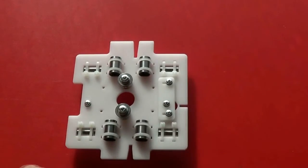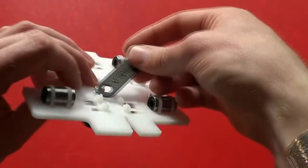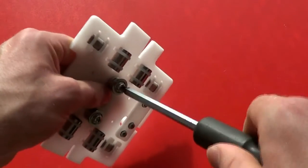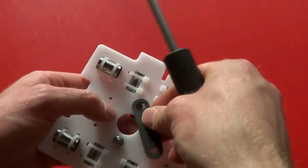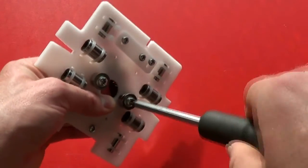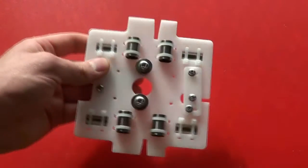And again, using the plastic spanner, tighten these using the posi drive number 2 screwdriver. First one. And the second one.